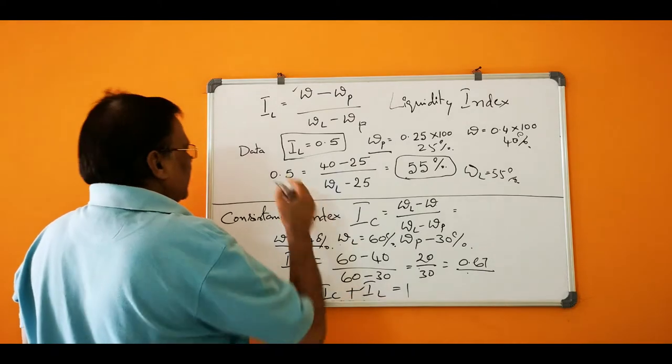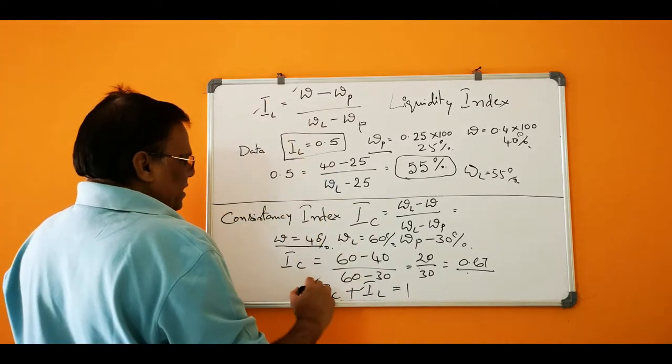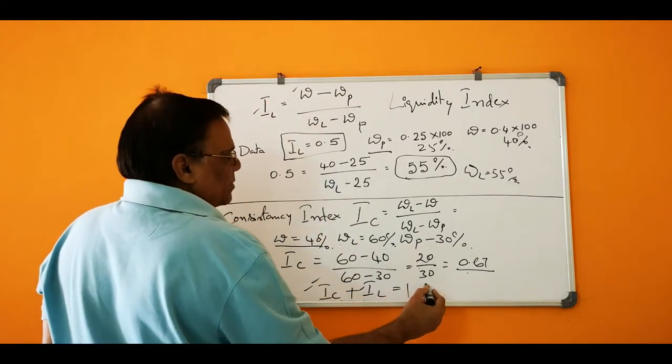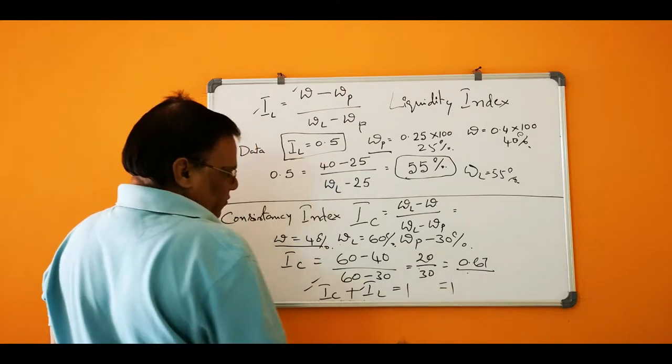If IC and IL, they must be equal to 1 for the same soil.